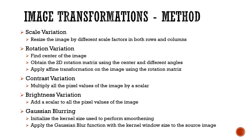Contrast variation was performed by multiplying pixel values of the image by a scalar. Brightness variation was achieved by adding a scalar to all the pixel values of the image. Gaussian blurring was used for blur variations, achieved by initializing the kernel size and applying the Gaussian blur function with the kernel window size to the source image. For all five variations we used a wide range of values and performed extensive analysis.